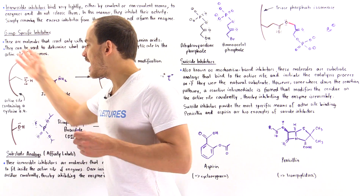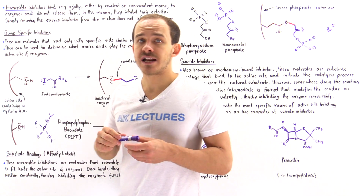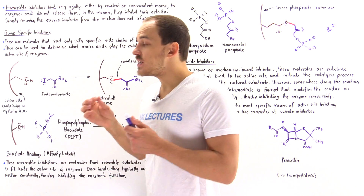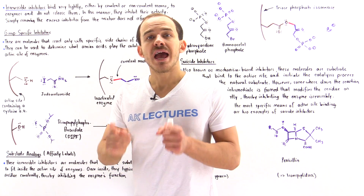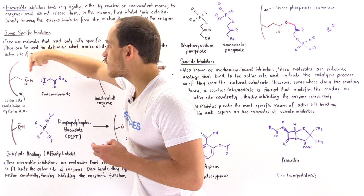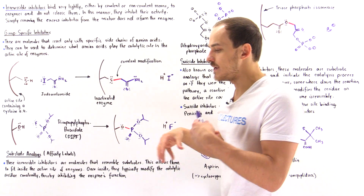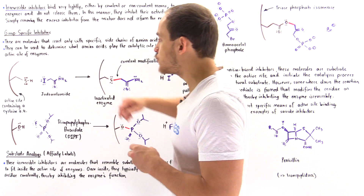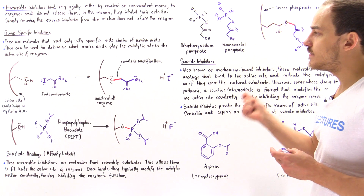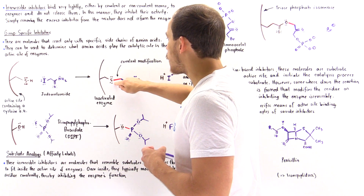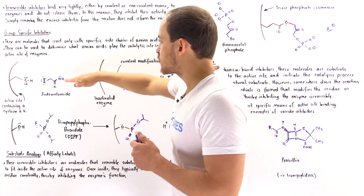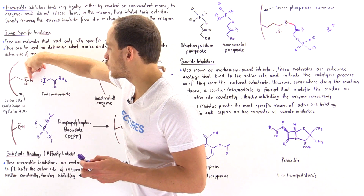If we take an enzyme whose active site contains a catalytic cysteine residue, iodoacetamide will react with that cysteine to form a covalent bond between this carbon and the sulfur atom. Because the sulfur of the cysteine side chain is used to catalyze the reaction, forming this covalent bond essentially deactivates and inhibits the activity of that enzyme. In this process, the iodide is kicked off and the H atom is also removed — the H carries a positive charge and the iodide a negative charge.